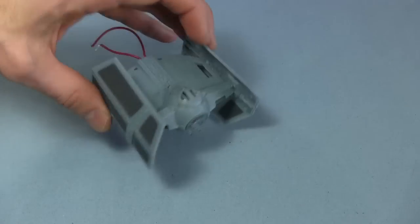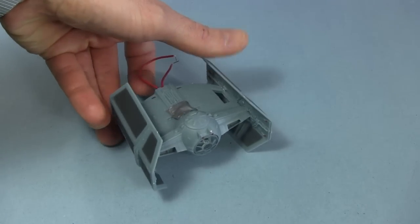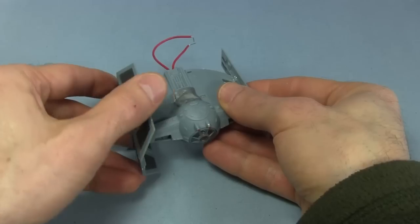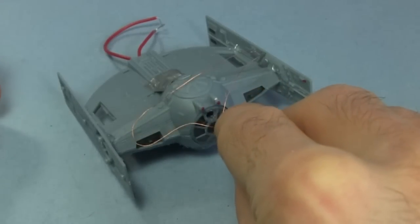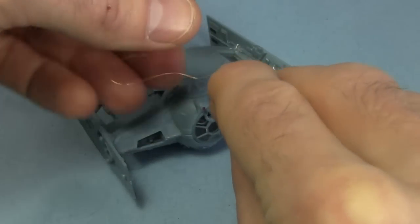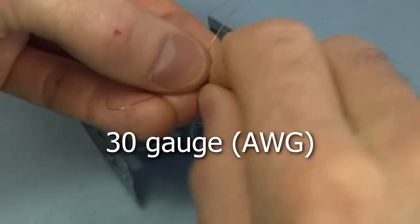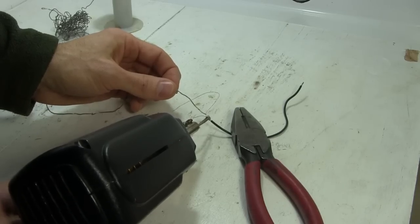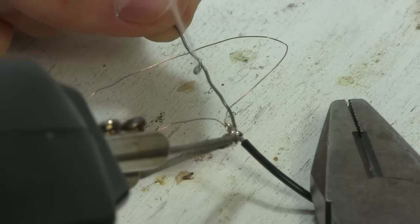I'll be putting the ion propulsion on the bottom of the TIE Fighter. Taking off the sides will make it easier. I start by making a loop of very thin bare copper wire. This is 30 gauge wire. I solder it to an insulated wire which will go to my high voltage power supply.